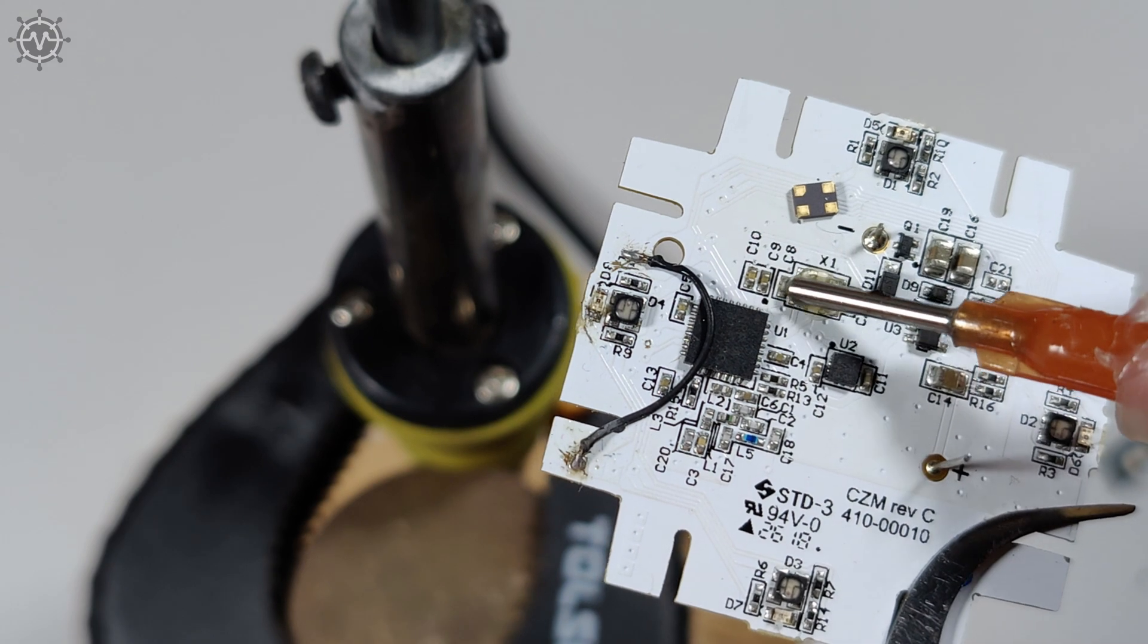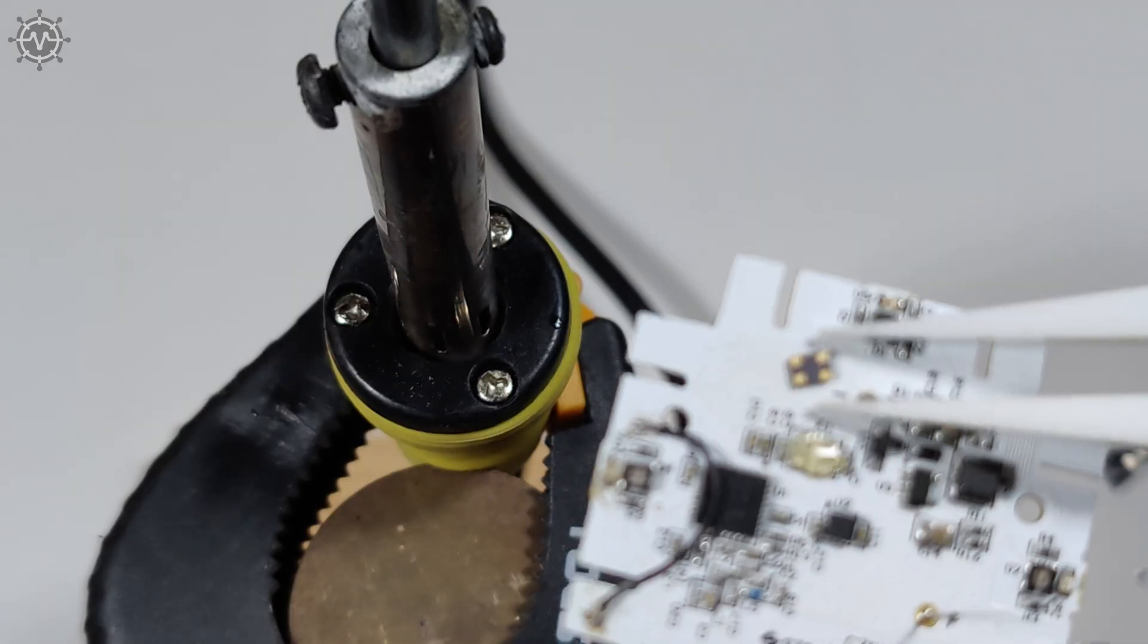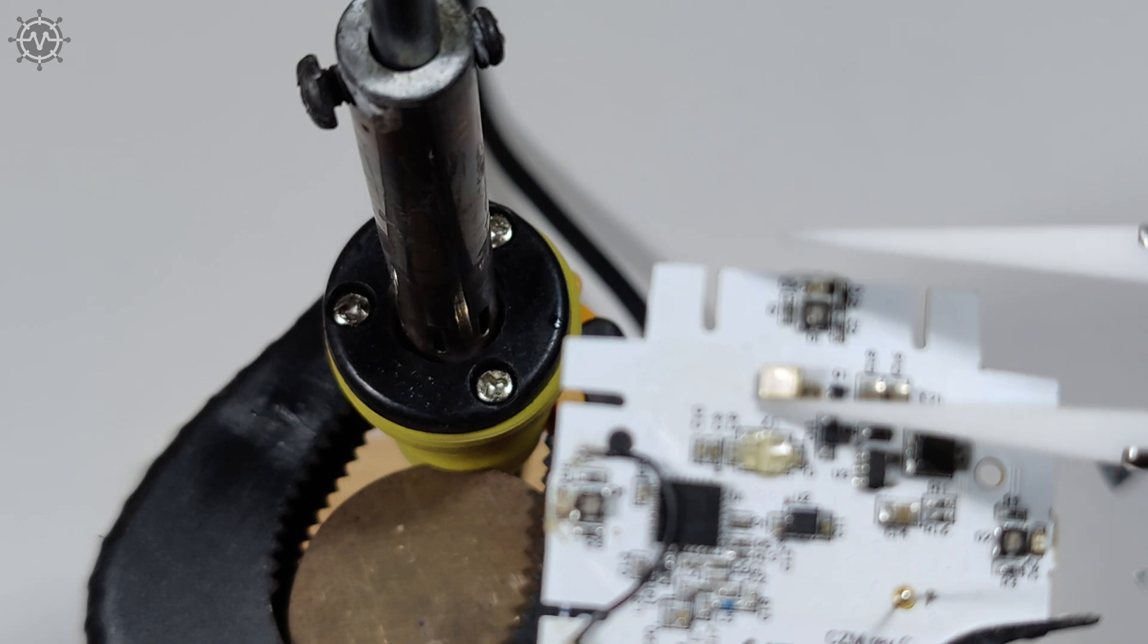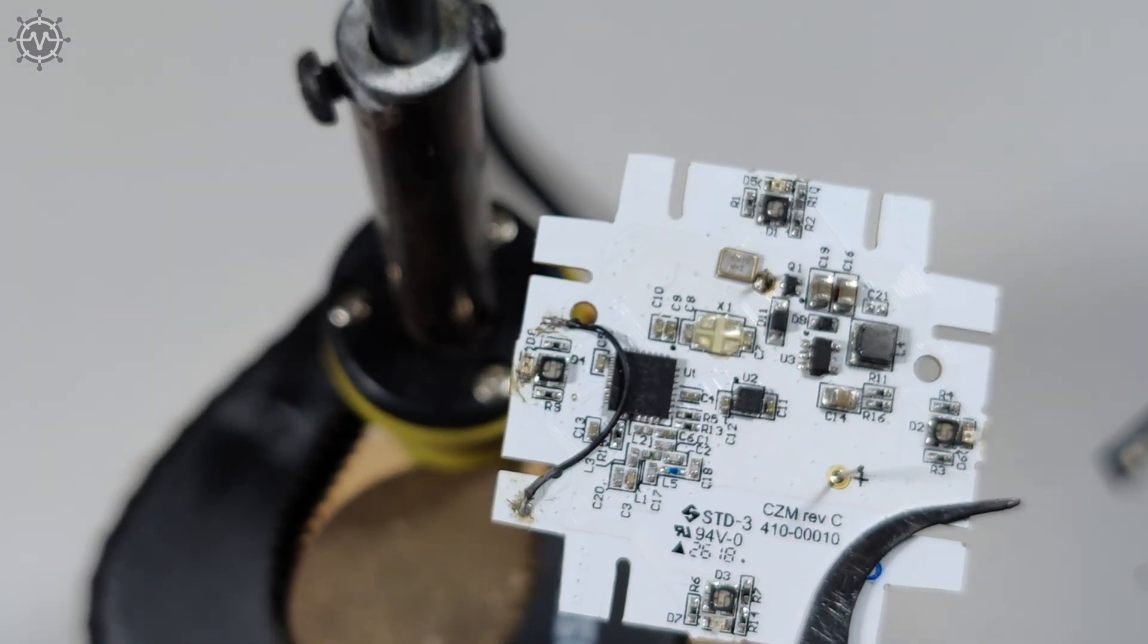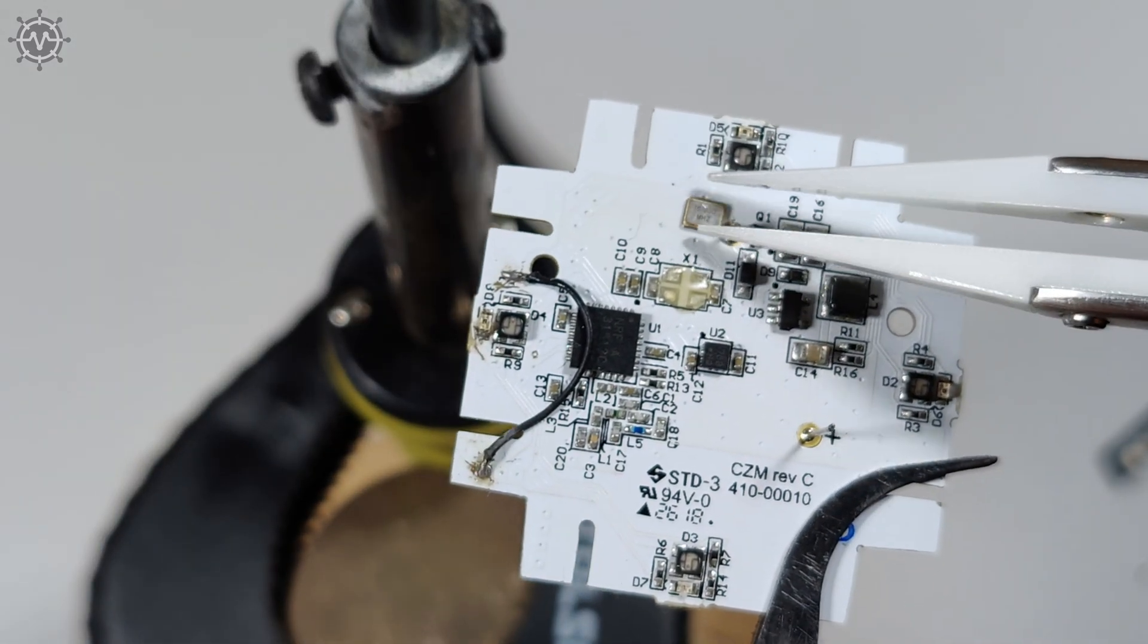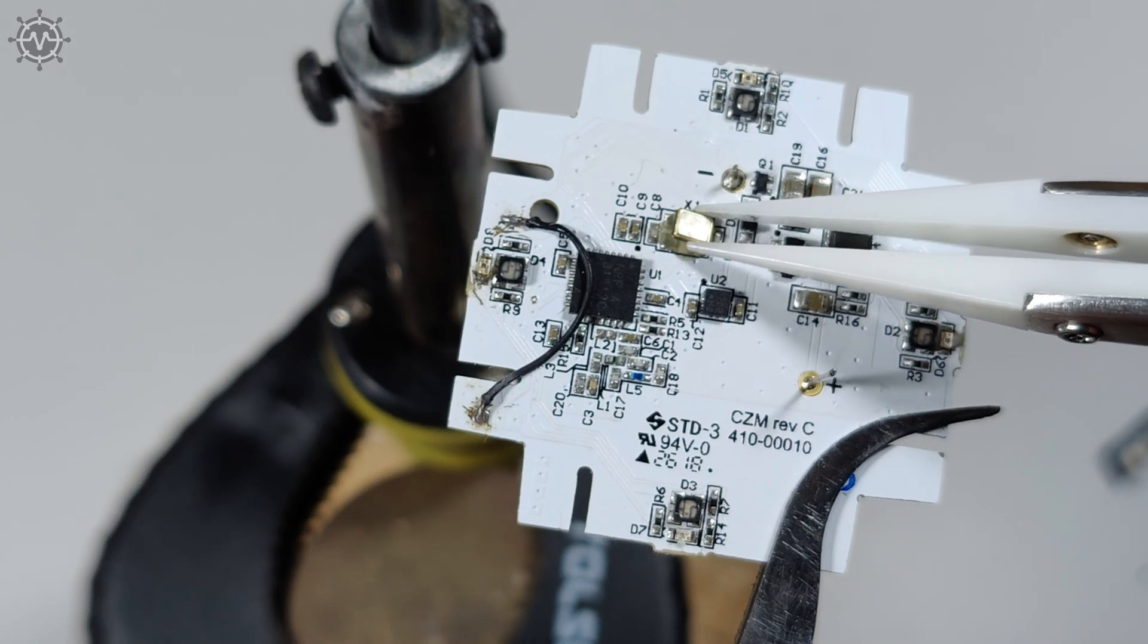After that, I applied soldering paste, flux, to the soldered area, put a new quartz crystal, and again heated the circuit board spot with a soldering iron until the solder under the crystal melted and the contacts touched.